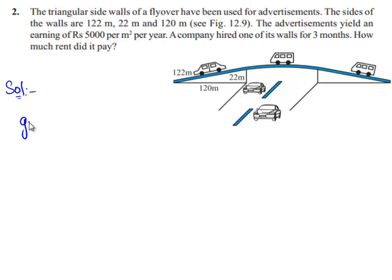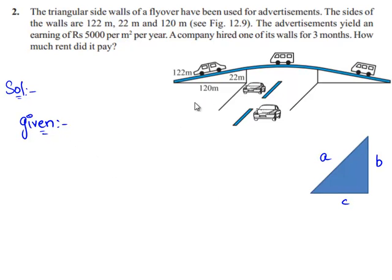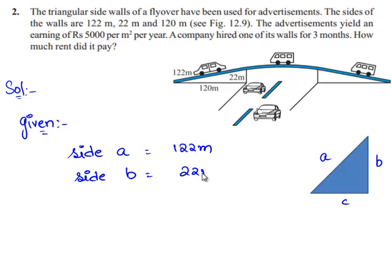Given data: the sizes of the triangular wall. Let the sides of the triangle be a, b, and c. Therefore, from the given figure, side a is equal to 122 meters, side b is equal to 22 meters, and side c is equal to 120 meters.